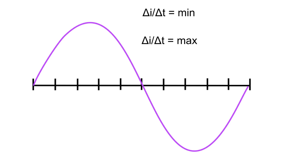Before we get back to analyzing those voltages, let's discuss this whole rate-of-change idea. Intuitively, if I asked you where on this sine wave you'd expect to see the minimum rate of change, your gut is going to tell you at zero — zero amps is the minimum, right? However, that is not true.